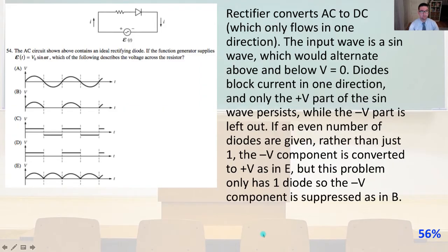Let's continue with solutions. Number 54. The AC circuit shown above contains an ideal rectifying diode. If the function generator supplies E of T equals V_0 sine ωT, which of the following describes the voltage across the resistor? Well, a rectifier converts AC to DC, and DC only flows in one direction,